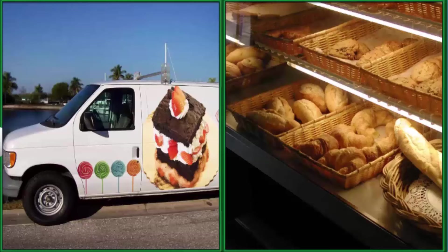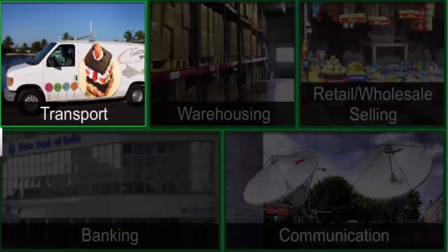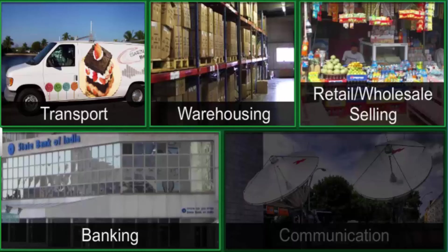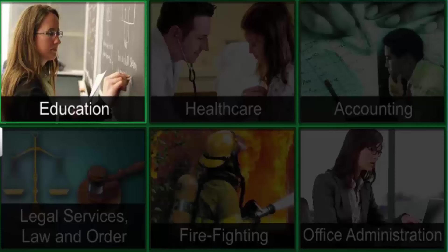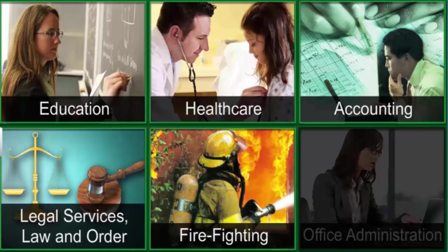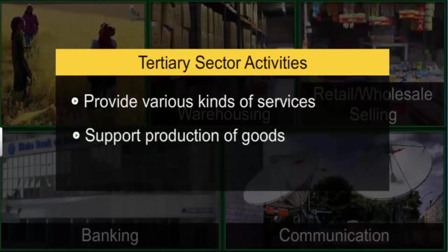Activities that support the manufacturing and distribution of goods produced in the primary and secondary sectors are called tertiary sector activities. These include transport and warehousing, retail and wholesale selling, banking and insurance, and communication services. The tertiary sector also includes essential services like education, transportation, healthcare, accounting, legal services, law and order, firefighting, and office administration. Since tertiary sector activities provide various kinds of services, it is also called the services sector.